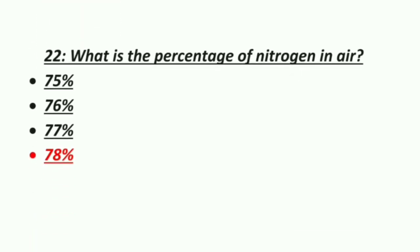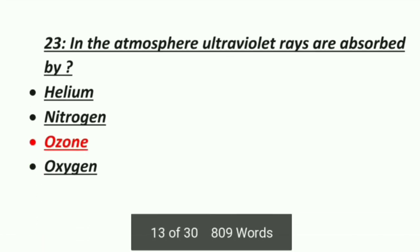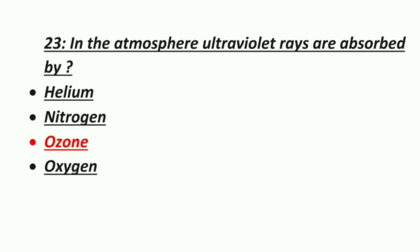Twenty-second MCQ: what is the percentage of nitrogen in air? Option 1: 75%, Option 2: 76%, Option 3: 77%, Option 4: 78%. The correct answer is 78% — nitrogen is present at 78% in the air.